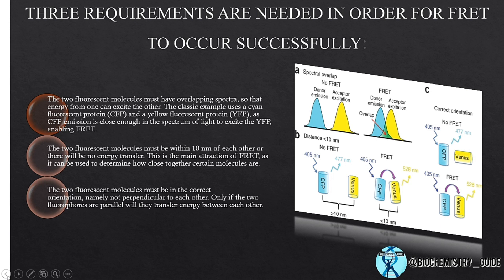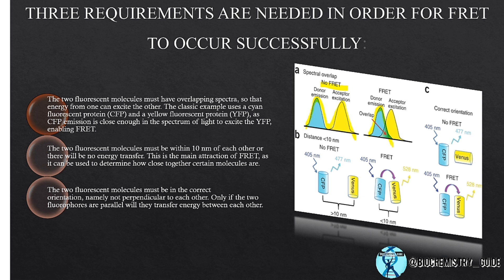The donor emits light which is absorbed by the acceptor, so the donor's emission spectra and the acceptor's excitation spectra should overlap each other. In the diagram, where the donor's emission spectrum and the acceptor's excitation spectrum do not overlap, there will be no FRET. Where they do overlap, FRET will occur.